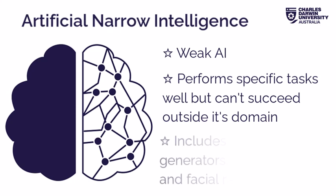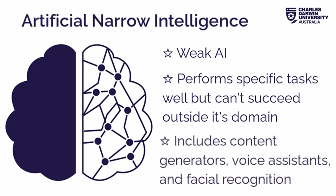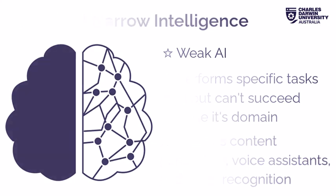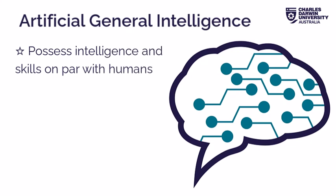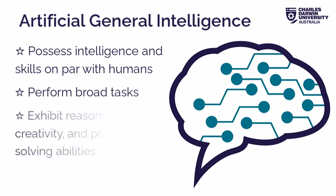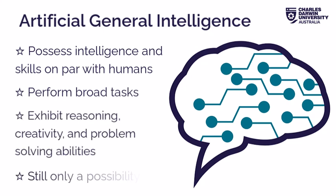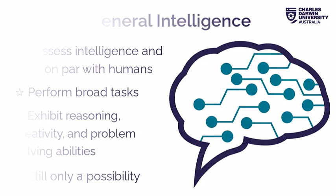ANI is prevalent in our daily lives and includes content generators, voice assistants and facial recognition. AGI, or artificial general intelligence, would possess intelligence and skills on par with humans. It could perform broad tasks and exhibit reasoning, creativity and problem-solving abilities. This type of AI is still only a possibility.